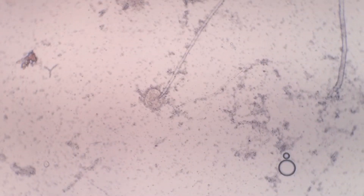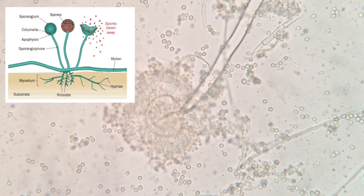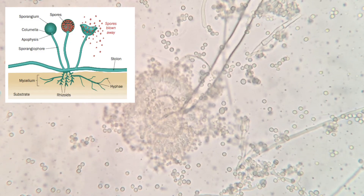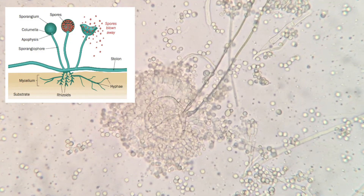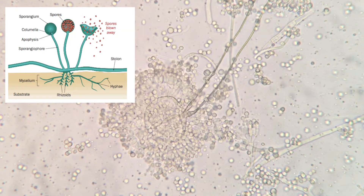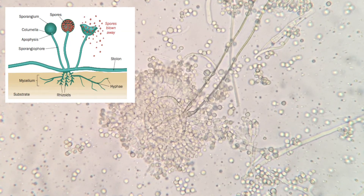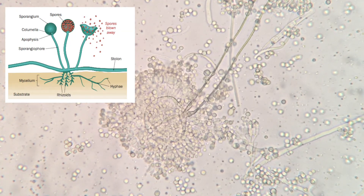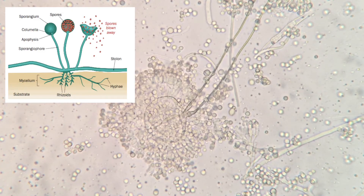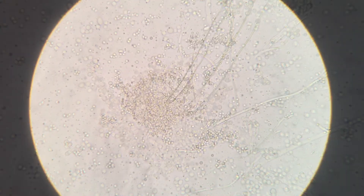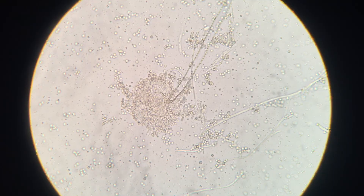Again we're starting to see a little bit more detail, but this high power view really shows us the spores, which are going to be the perfect circles all around there, and then this larger circle in the center is going to be the sporangium. I've put a little picture in the top left so you can get an idea of that. That is how the fungus reproduces — those spores will land on another piece of bread and make more mold.